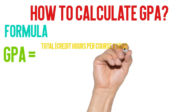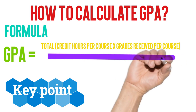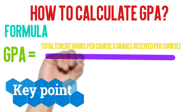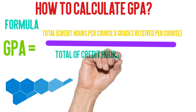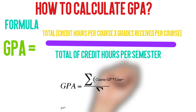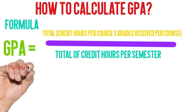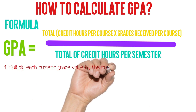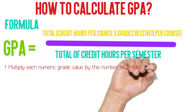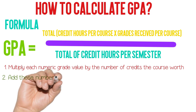The GPA formula is equal to the sum of total credit hours per course multiplied by the grade received per course, then divided by total credit hours per semester. Let me explain this formula — GPA calculation requires only 4 easy steps.